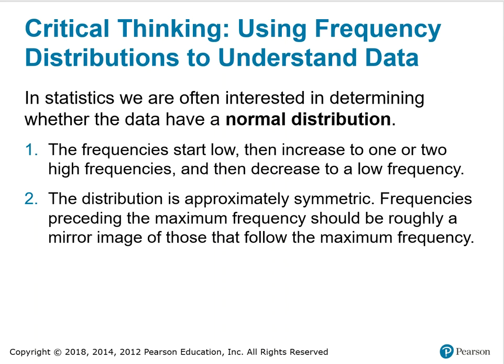In statistics, we're often interested in determining whether the data have a normal distribution. The frequencies start low, then increase to one or two high frequencies, and then decrease to a low frequency. The distribution is approximately symmetric — frequencies preceding the maximum frequency should be roughly a mirror image of those that follow the maximum frequency. These are the two criteria we use to determine whether a distribution appears to be normal.